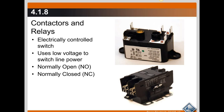What it does is it uses low voltage to switch line power. For example, your thermostat will switch on the compressor, the fan, and the electric strip heat using low voltage controls. The contacts on the contactor and relay are what we call normally open and normally closed, and we'll take a look at those.